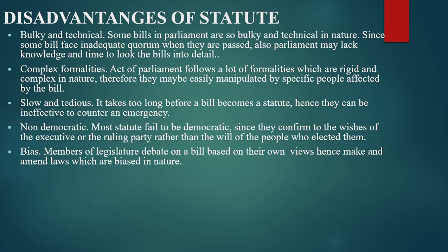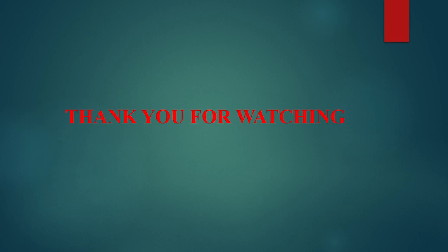Bias: if the members of Parliament from the ruling party outnumber those from the opposition, they may formulate bills that conform to the wishes of the bosses in the executive. Members of Parliament can also create bills based on their own wishes and personal feelings about the bill.